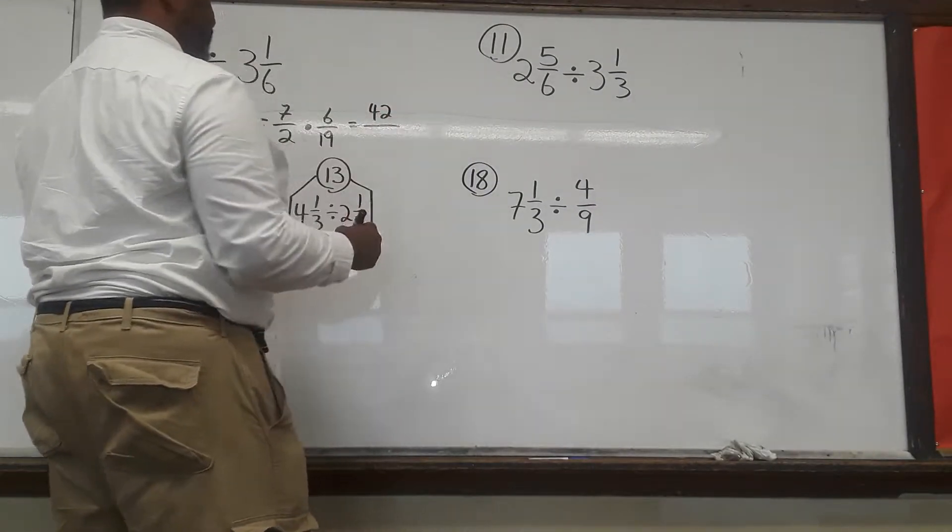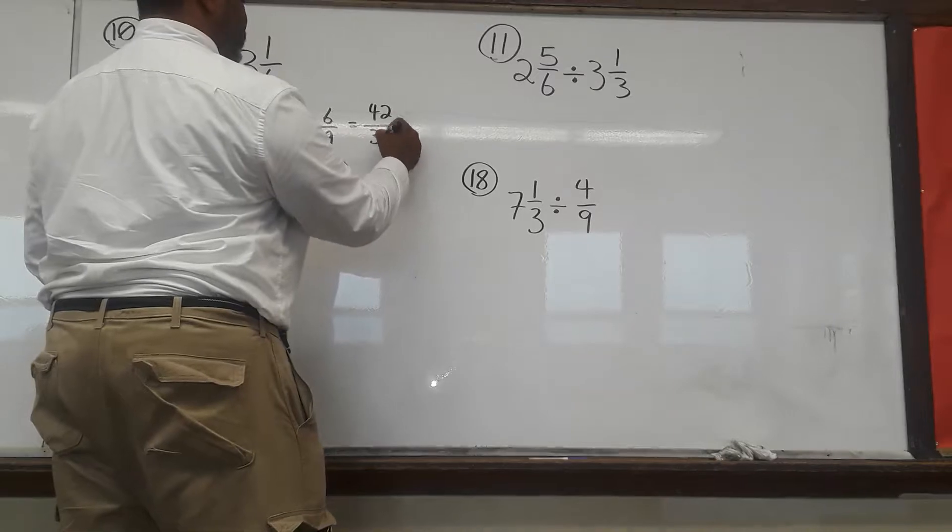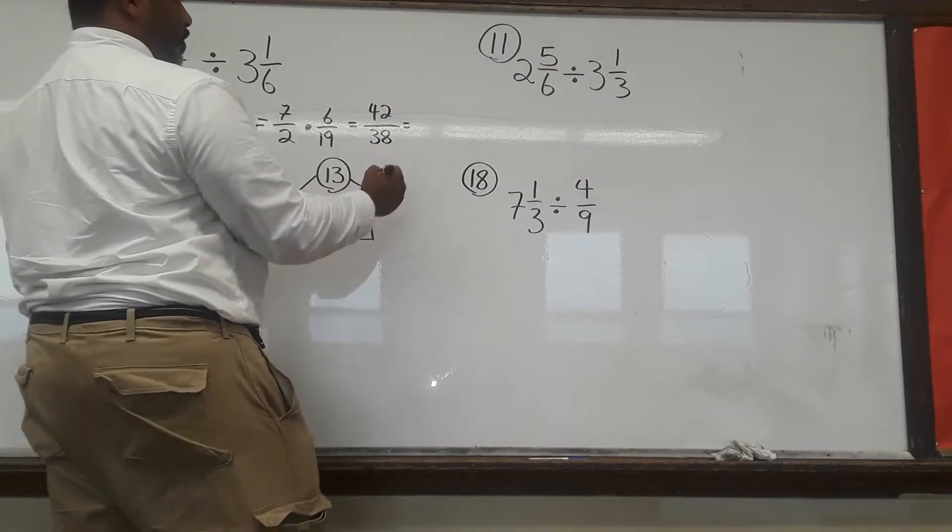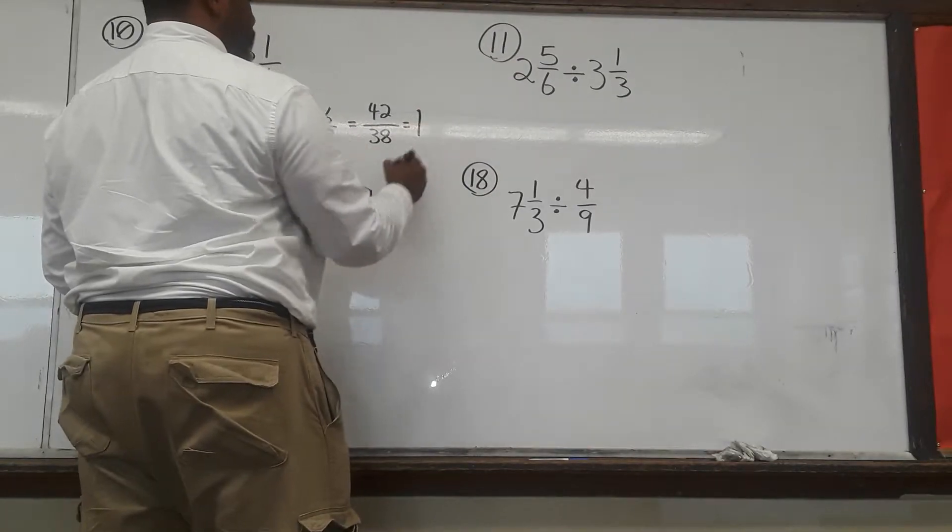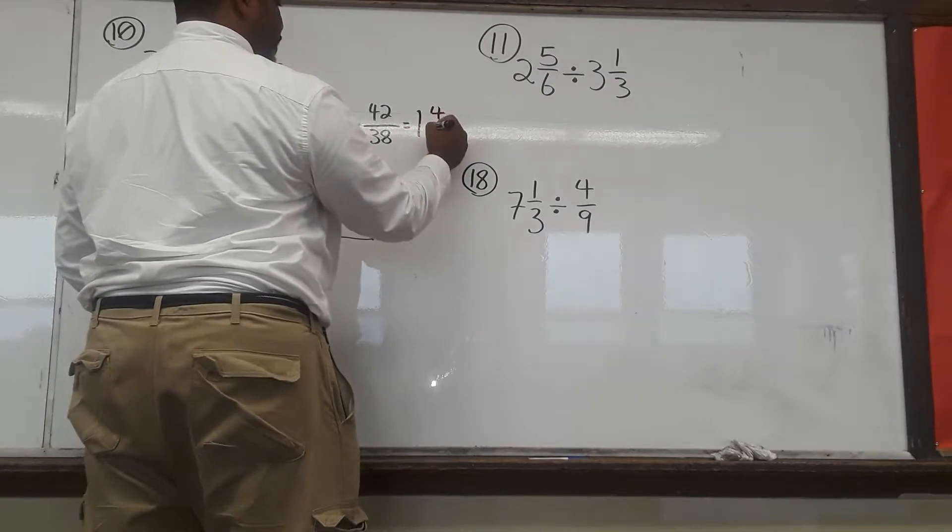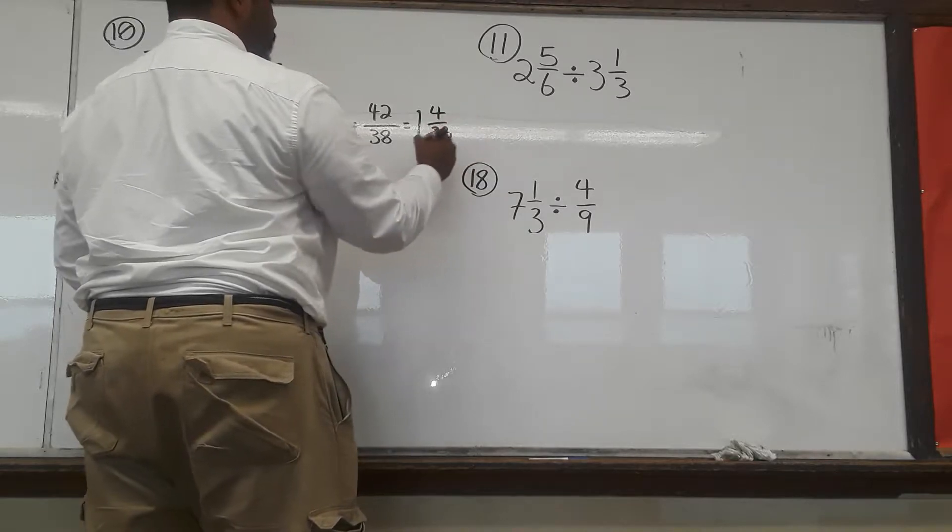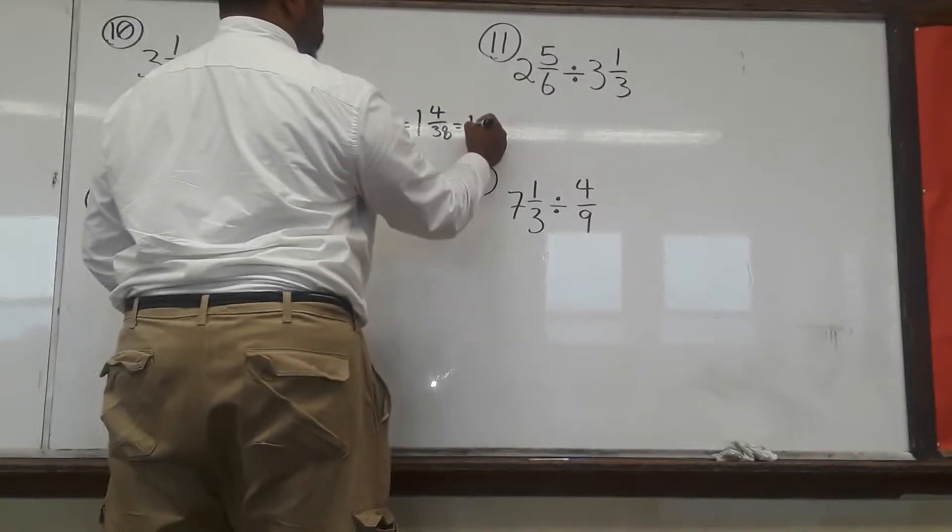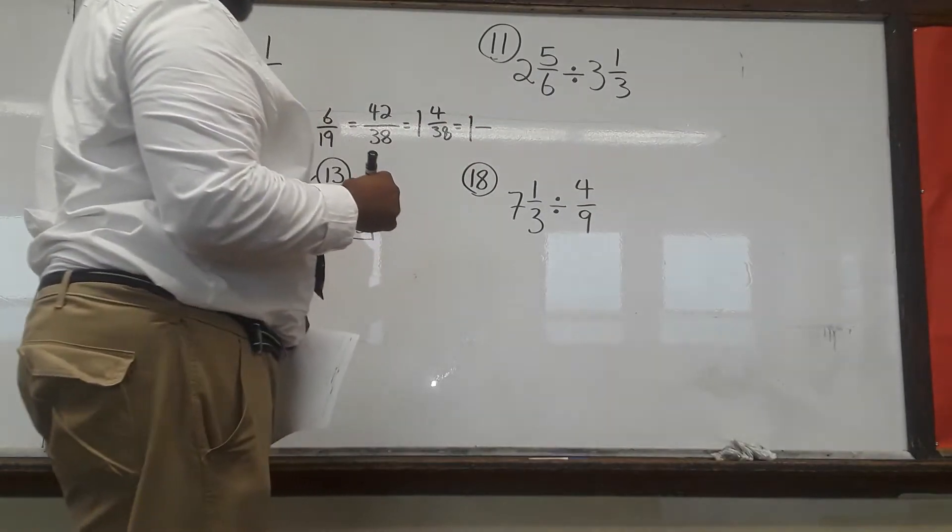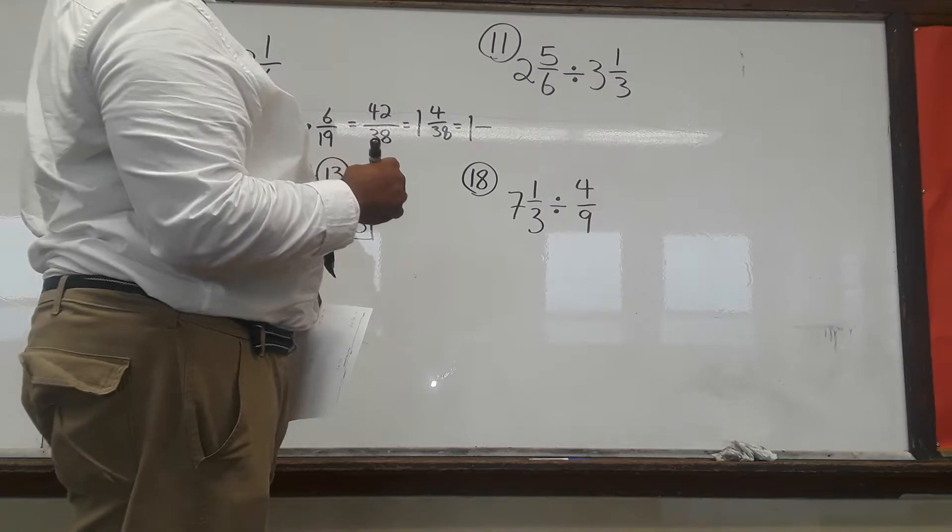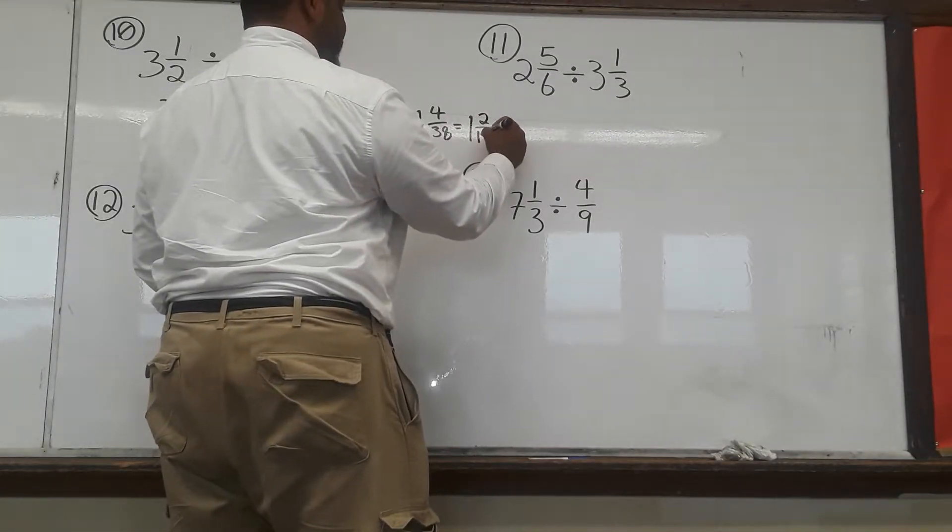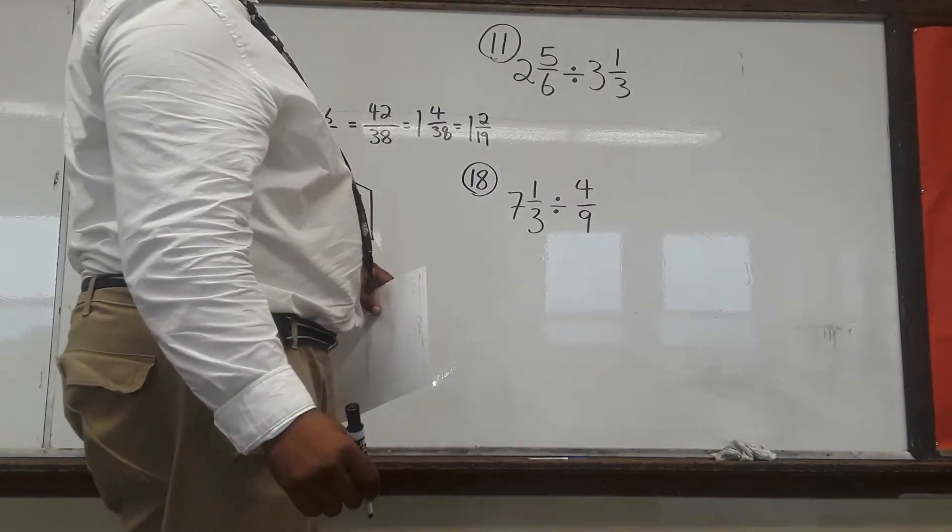2 times 19 is going to give us 38. We can pull the 38 out of the 42 one time, and 42 minus 38 leaves us with 4 38s, which we can then simplify into 1, and 38 is divisible by 4. No, it's not, but it's divisible by 2. So, that's going to be 1 and 2 19s is our answer for number 10.